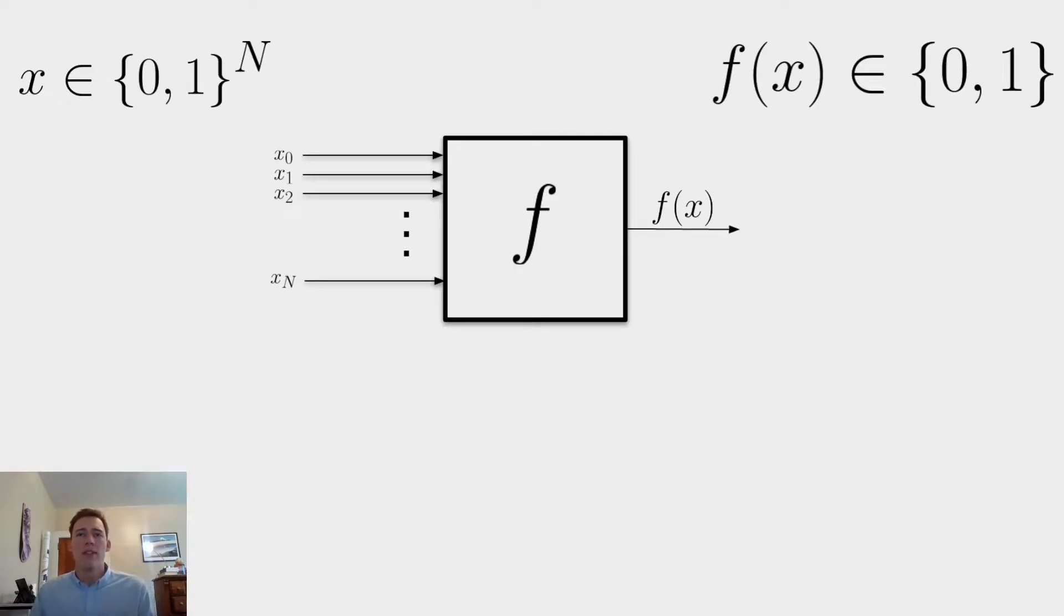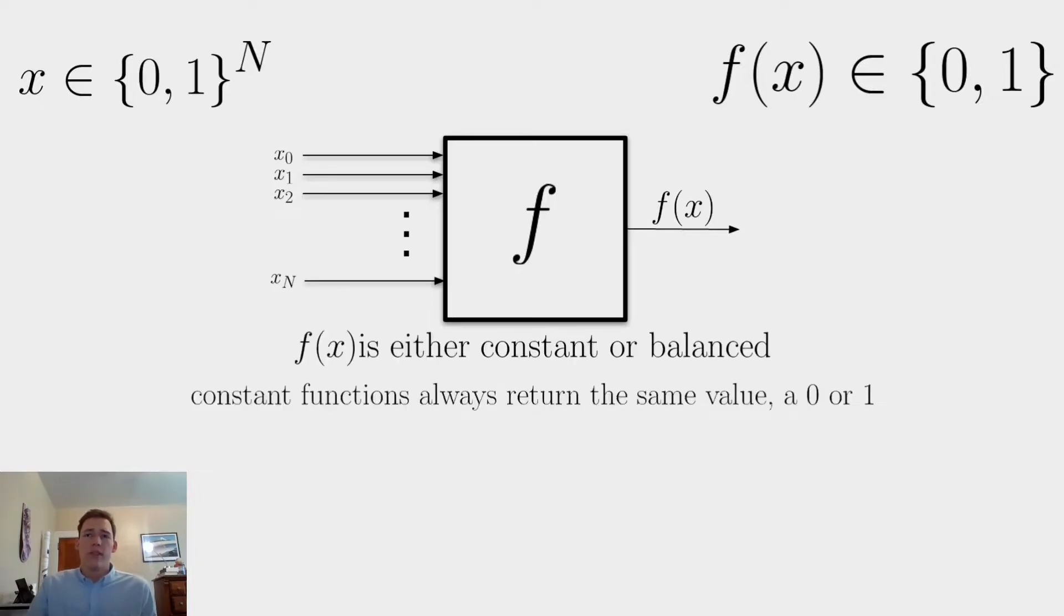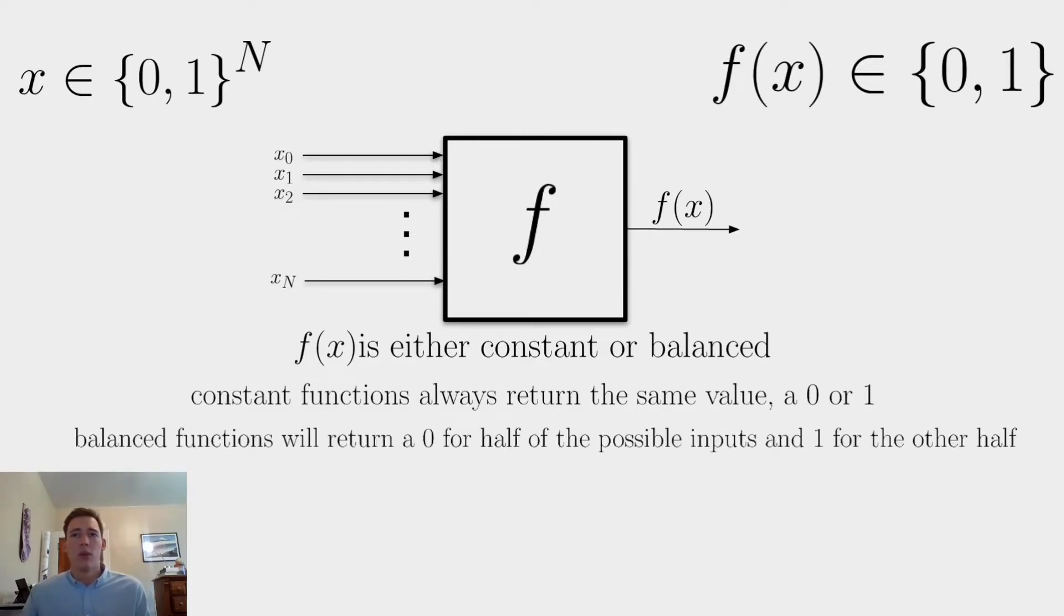With this in mind, we can imagine f as sort of being a black box, where we're feeding binary numbers into it and getting a single bit out of it. In the case of Deutsch's Algorithm, we know that f is either going to be constant or balanced. A constant function is one which always returns the same value, either a zero or one, while a balanced function is one which will return a zero for half of the values of the possible inputs and a one for the other half of the values.